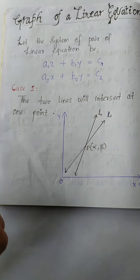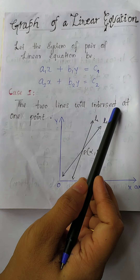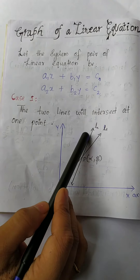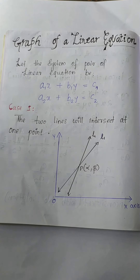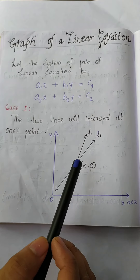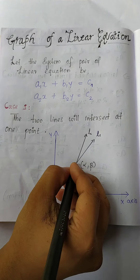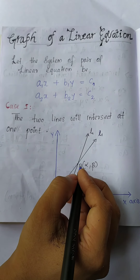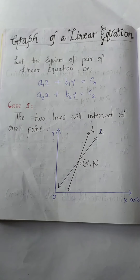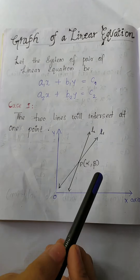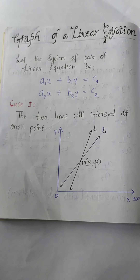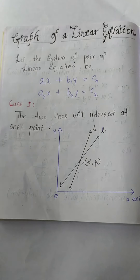First case: the two lines will intersect at one point. When we draw the graph, L1 represents one equation and L2 represents another equation. The lines will be intersecting at a point. This point of intersection gives a unique solution. The value of x and y at that point will be alpha and beta. This is a consistent system with unique solution.